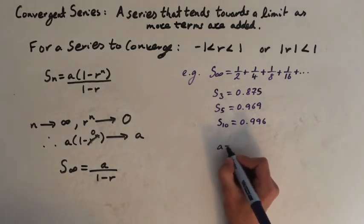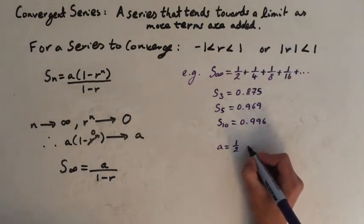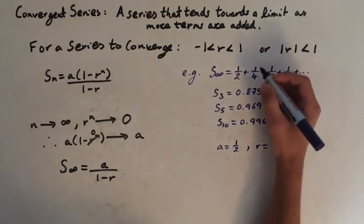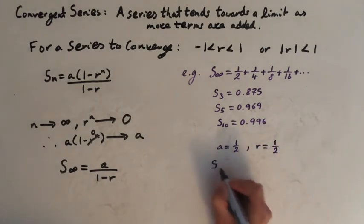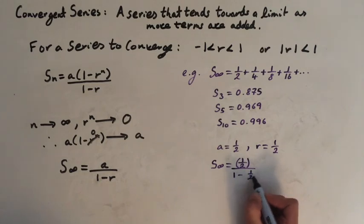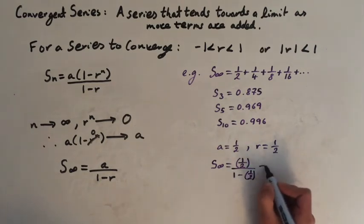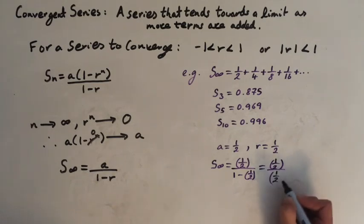So you can see that the first term is a half. This term right here. And the ratio is also half. So the sum should be a half, so the value of a over 1 minus a half, the value of r, simplifies to a half over a half. And these cancel out to give us 1.